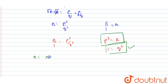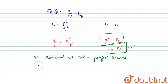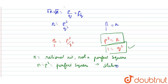We assumed n is not a perfect square. But in our case, n = p², and p² is a perfect square. So our statement is contradicted.